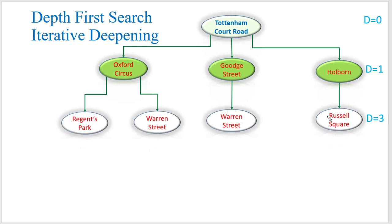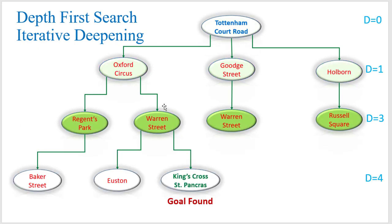Now we reach depth three, and we have to do the same procedure — find out the next reachable from this node, this node, and this node.